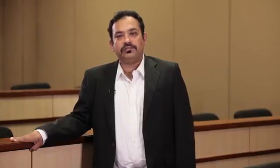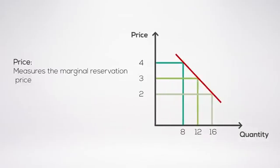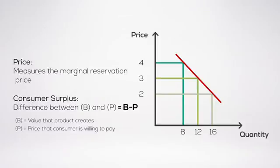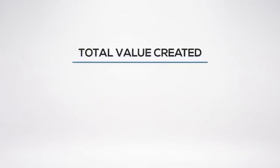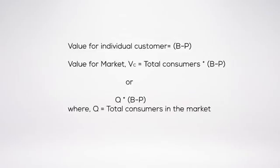Many of you would have seen a demand curve. I am going to give you a very different interpretation of the demand curve that will enable you to measure the value that your intended good is creating in the market. The price measures the marginal reservation price — the highest the buyer would be willing to pay for your good. Consumer surplus is just the difference between the value the product creates, which is B, and the price the consumer is willing to pay, P. To scale value from an individual customer — which is B minus P — to a market level, we simply multiply by Q, the total number of consumers in the market, giving us Q times (B minus P).